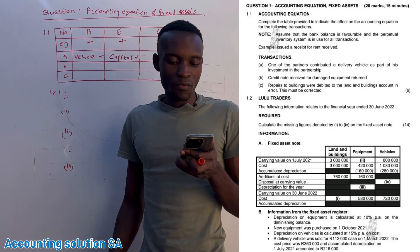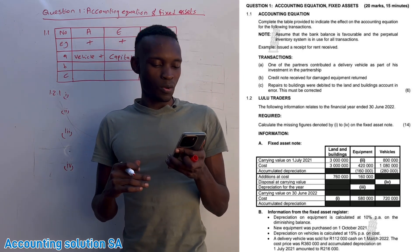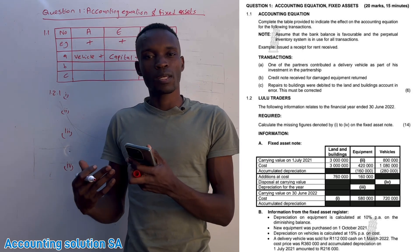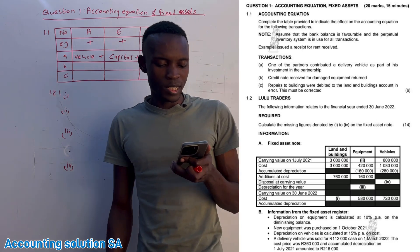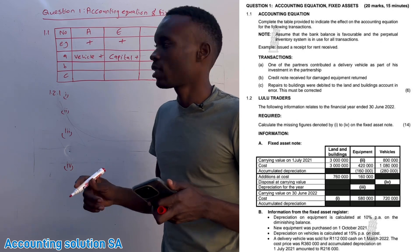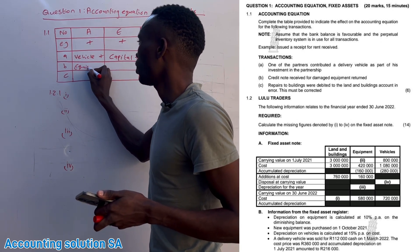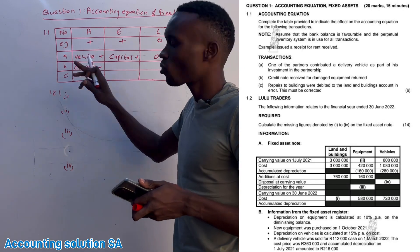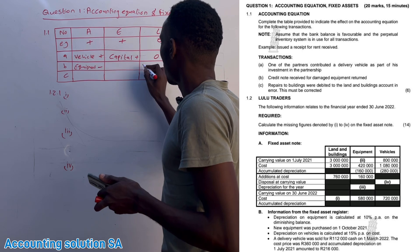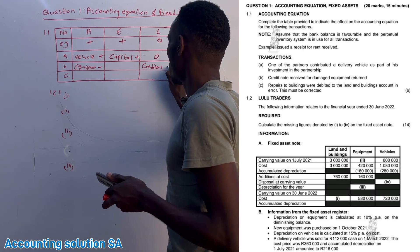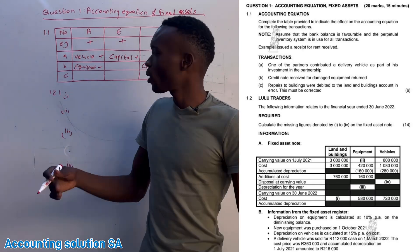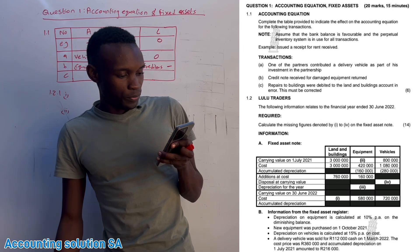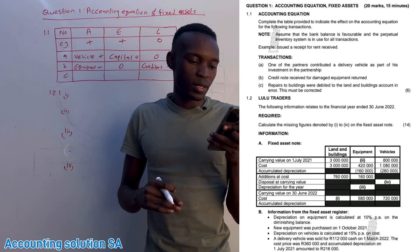Transaction B: a credit note received for damaged equipment returned. As a business, receiving a credit note means we have returned something — the supplier issued a credit note. We returned the equipment, so equipment is no longer part of our assets — it has decreased. We are no longer going to pay for this equipment, so the creditor liability decreases. There is no effect on equity.